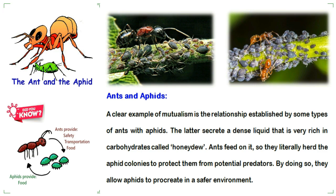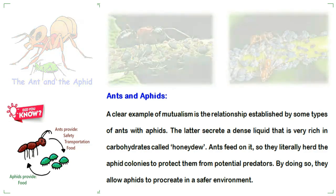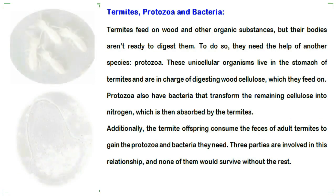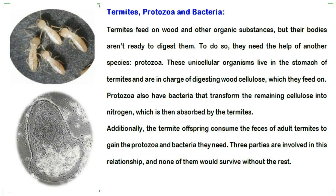A clear example of mutualism is the relationship established by some types of ants with aphids. The aphids secrete a dense liquid very rich in carbohydrates called honeydew. Ants feed on it, so they literally herd the aphid colonies to protect them from potential predators. By doing so, they allow aphids to procreate in a safer environment.